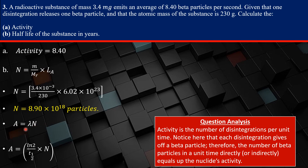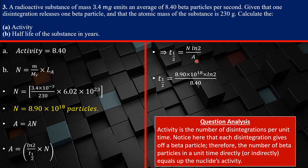You recognize that lambda, the decay constant, is equivalent to ln(2) over T-half. So let's make T-half the subject. T-half would be N times ln(2) over A, the activity. So T-half is calculated using N from here divided by A, the activity. Our T-half comes out to 7.34 times 10^17 seconds.